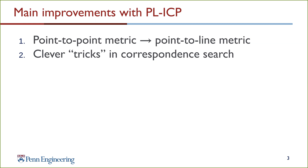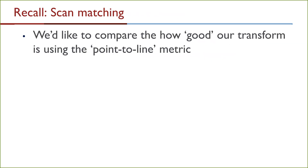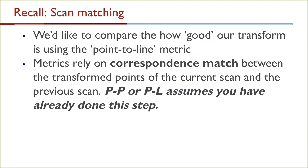In scan matching, we'd like to compare how good one transform is compared to another, and to do this we define the point-to-line metric. These metrics rely on a correspondence match between the transformed points of the current scan and the previous scan. In order to compute the metric, you need to know which transformed point in the current scan corresponds to which point in the previous scan. Both the point-to-point and point-to-line metrics assume that you have already done this correspondence step.